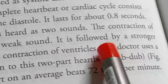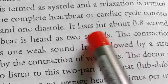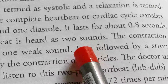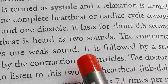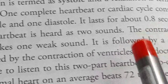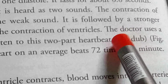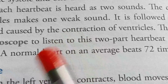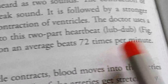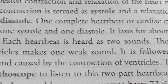Each heartbeat is heard as two sounds. The contraction of the auricles makes one weak sound, and it is followed by a stronger sound caused by the contraction of the ventricles. These two sounds together make a complete heartbeat. The doctor uses a stethoscope to listen to these two-part heartbeat sounds. A normal heart beats on average 72 times per minute.